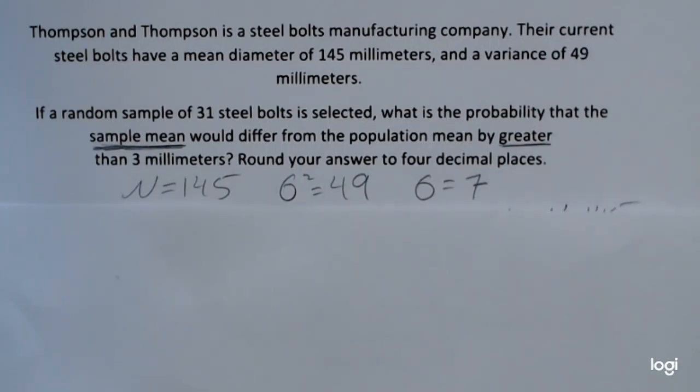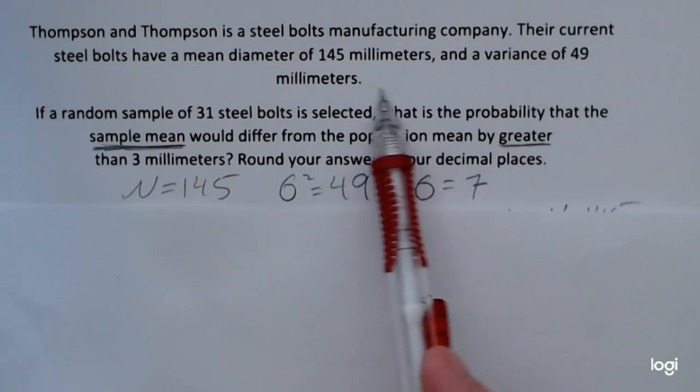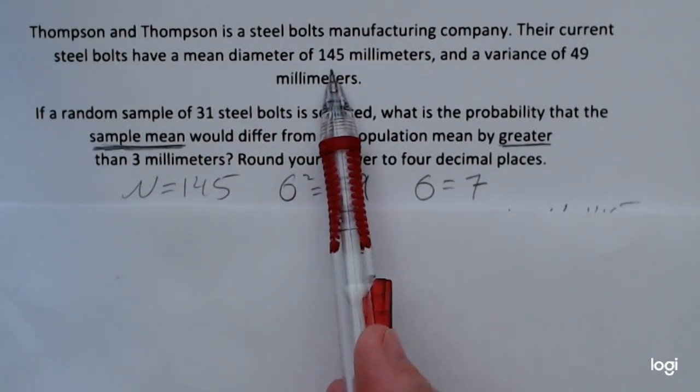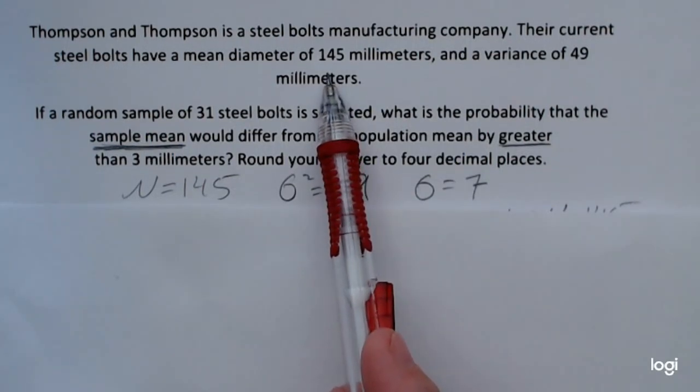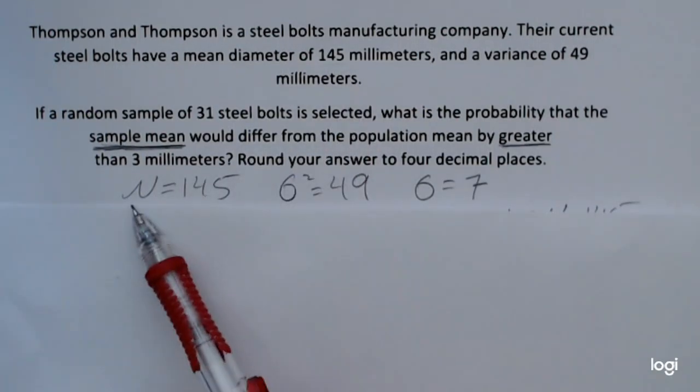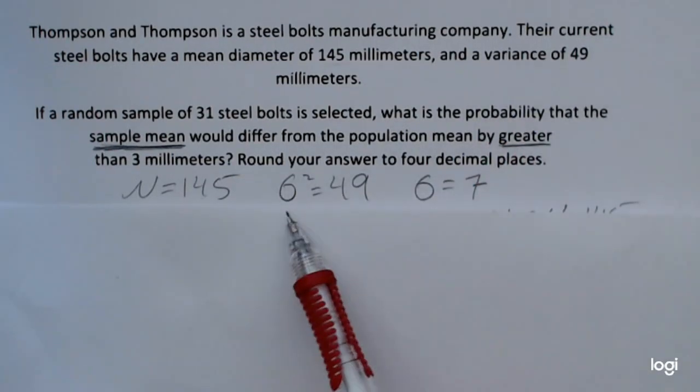To summarize the pieces given, they say or they claim that their mean diameter of their bolts is 145 millimeters. That's basically their specifications. 145 for the mean, so mu would be 145, and the variance is 49.